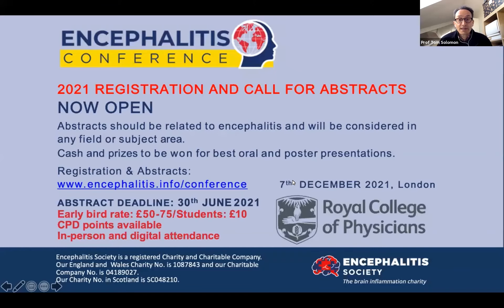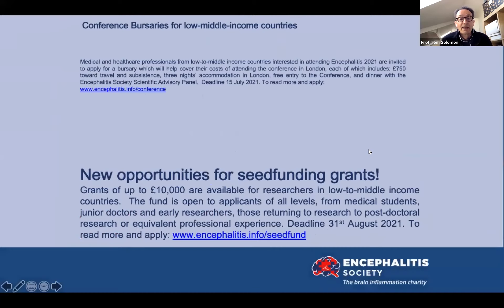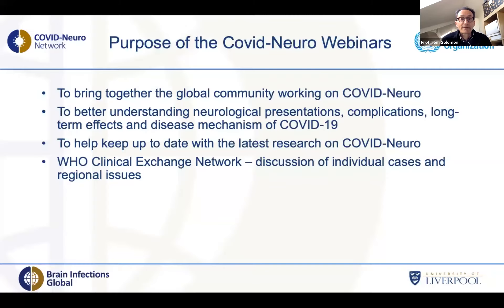I also wanted to give you advance notice of the Encephalitis Conference, which is planned for December 2021 at the Royal College of Physicians in London. For people who need help getting there, there are bursaries available. The Encephalitis Society also provides seed funding grants. But back to our COVID neuro webinars.